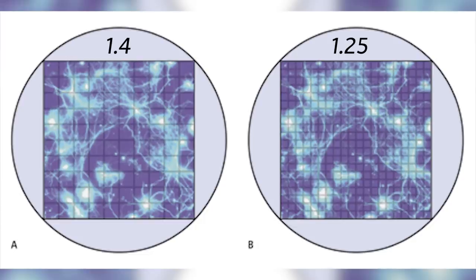Pixel size — the name says it all; it's the size of an individual pixel, measured in microns. For a given sensor, a lower pixel count means the individual pixel size is larger, and a high pixel count means the individual pixel size is smaller.